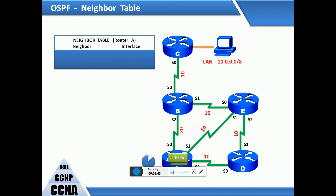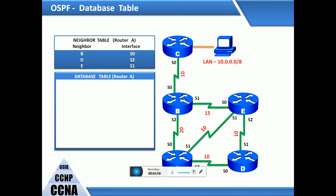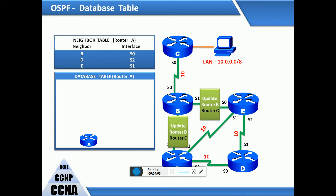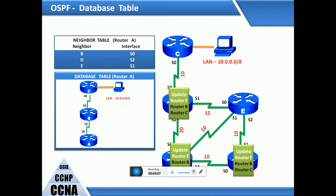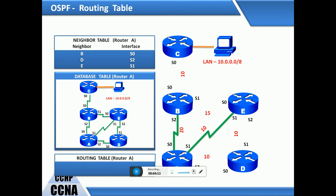This is the database table for router A. Updating router C and router B involves data transfer to router C. Based on this, we can determine which is the best path. The routing table for router A is then populated accordingly.